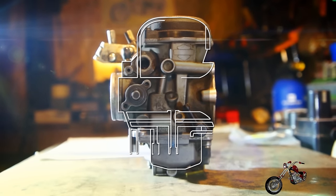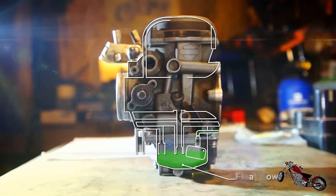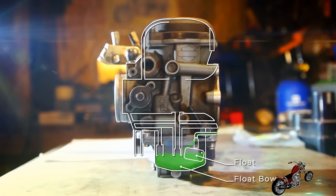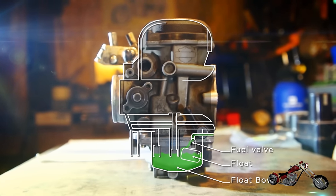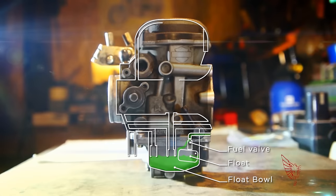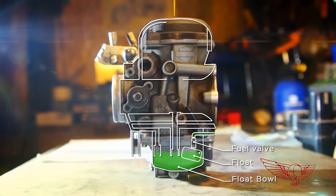In the lower part of the carburetor we have the float bowl, always topped off with gasoline thanks to the action of the float and the fuel valve. As the fuel level drops, the float opens the valve to raise it back up.